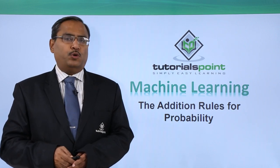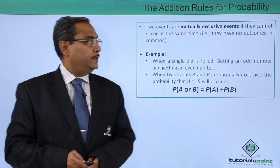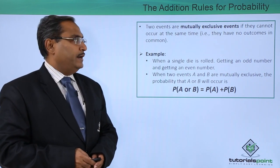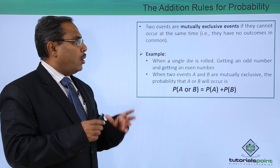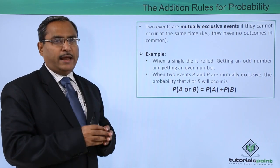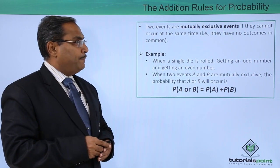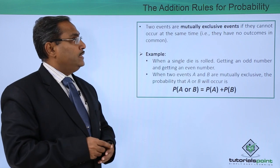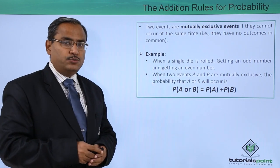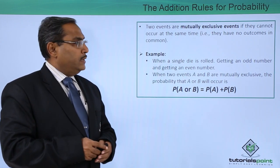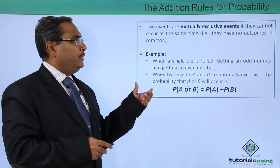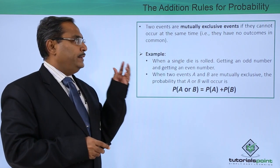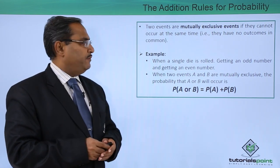The addition rules for probability. Two events are mutually exclusive events if they cannot occur at the same time, that is, they have no outcomes in common. Then we can use this addition rule for probability. This addition rule for probability will be applicable between two events when they are mutually exclusive events.